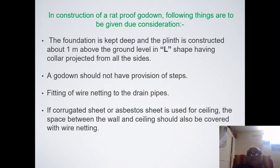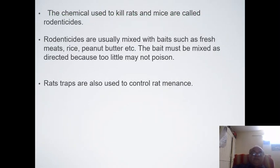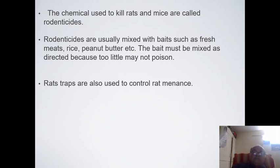Sometimes chemicals called rodenticides are used to kill rats and mice. While physically restricting entry of rats is the best solution, when rats have already entered a godown rodenticides can be mixed with baits of fresh meat, rice, or peanuts so that they are consumed by the rats. Rat traps are also used for controlling rats.